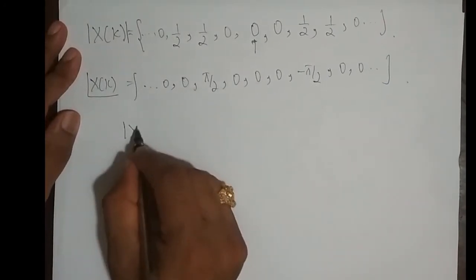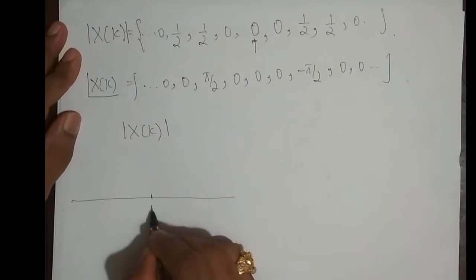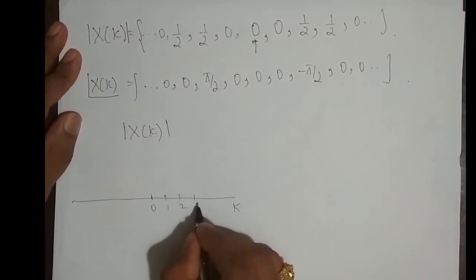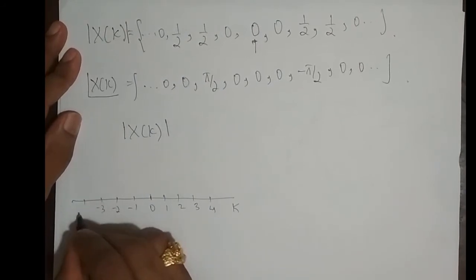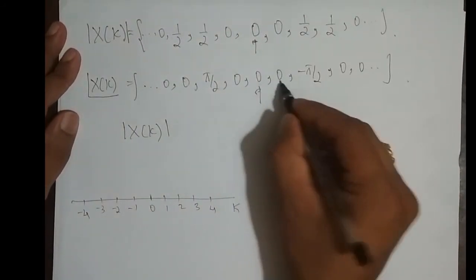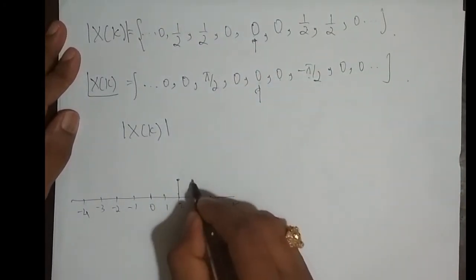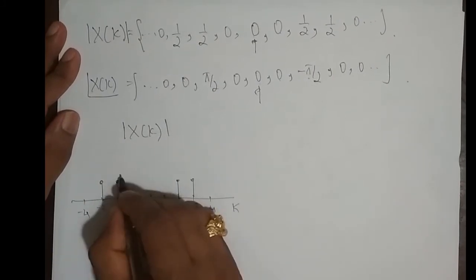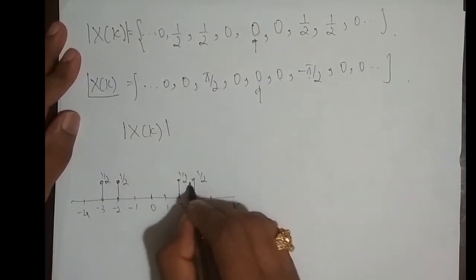Plotting the magnitude spectrum: on the k-axis we mark values at k = 0, ±1, ±2, ±3, ±4. The magnitude is 1/2 at k = ±2 and k = ±3, and zero elsewhere. The magnitude spectrum is symmetric about k = 0.